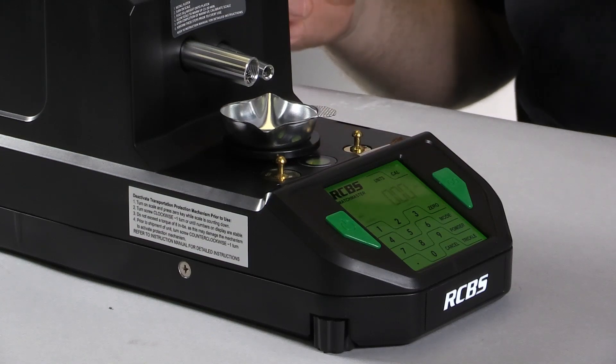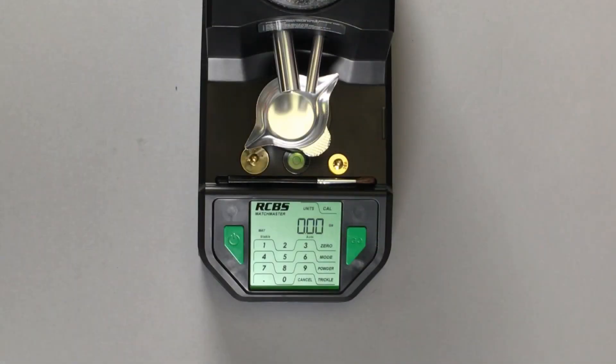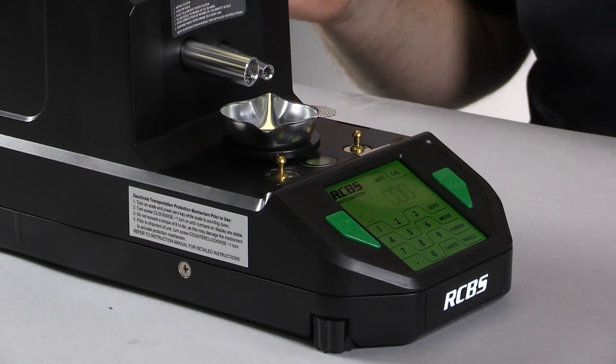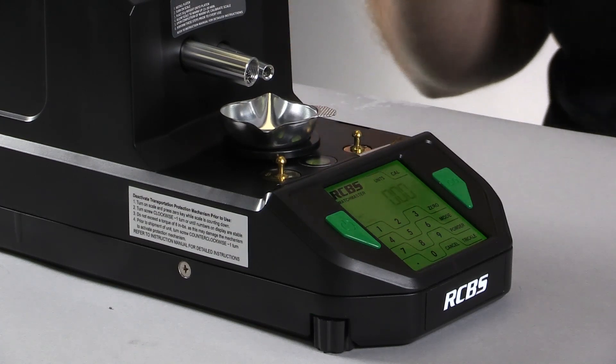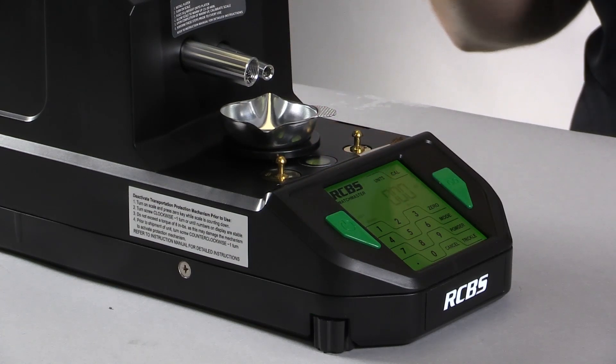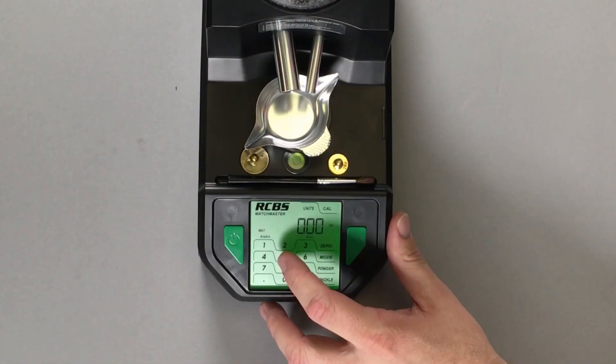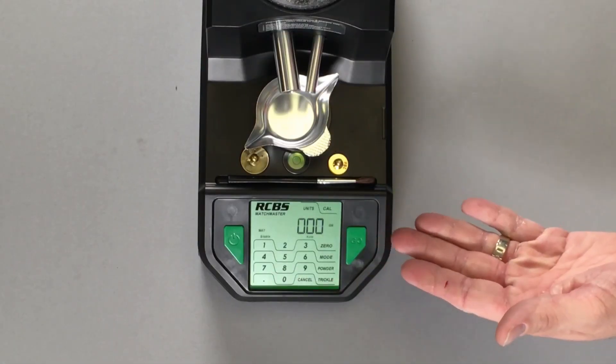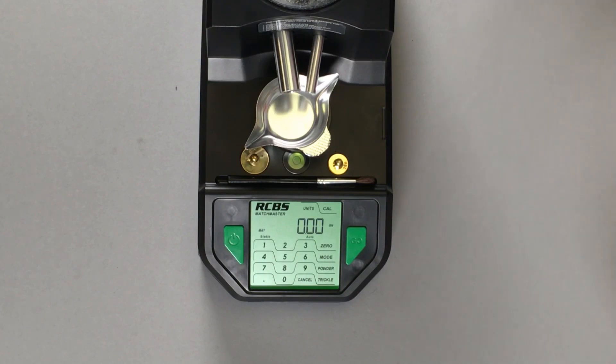After the Matchmaster has had a warm-up period and has been calibrated, it's time to select the powder type you're going to be using. You must select a powder dispense speed prior to dispensing powder or you're going to have an error. That error that will be displayed is ERR03. If it has an ERR03, it means pick a powder type, pick a powder speed.